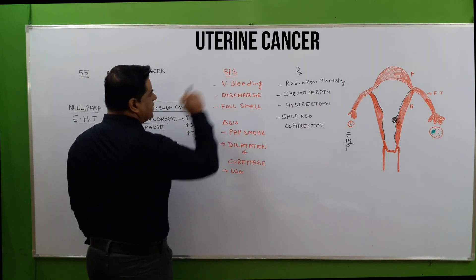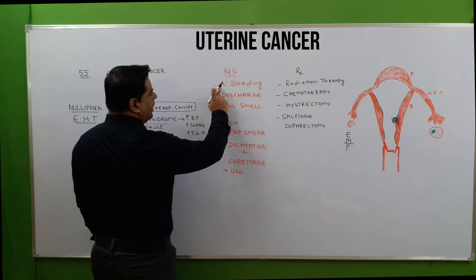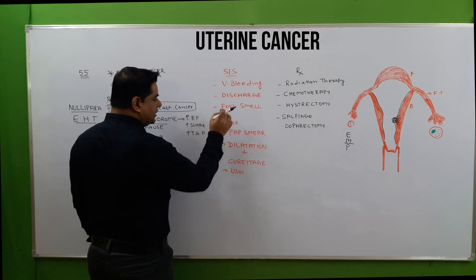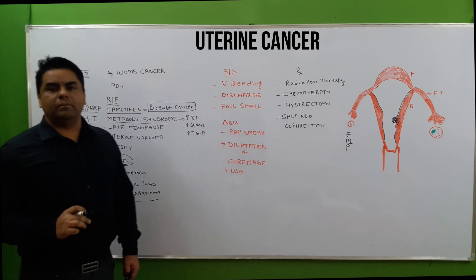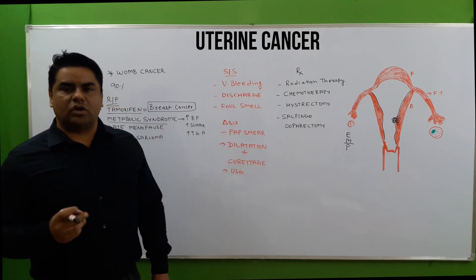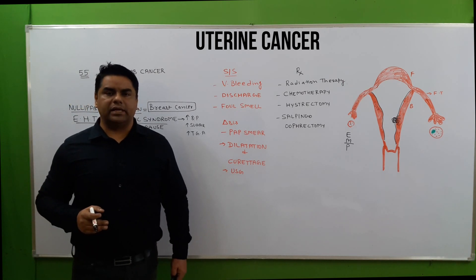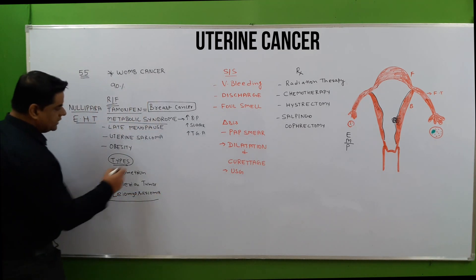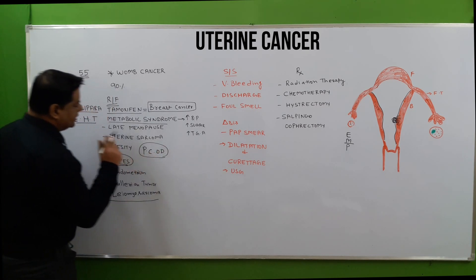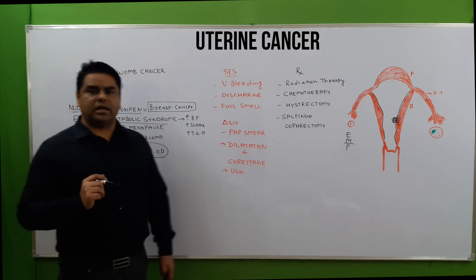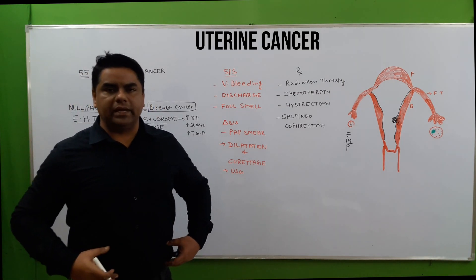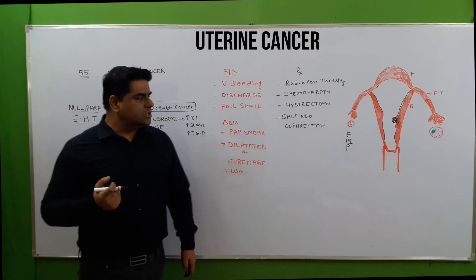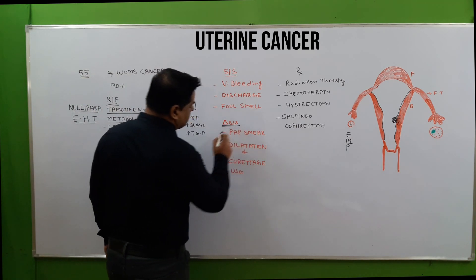Signs and symptoms include unusual vaginal bleeding and discharge with a foul smell. There can be pelvic pain, abdominal pain, and back pain — especially in cases of obesity where the patient is already bulky. In patients with PCOD, there will be low back pain, abdominal pain, and a large uterine size due to distension.